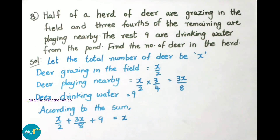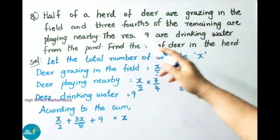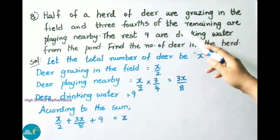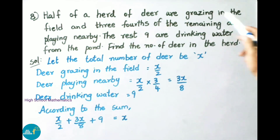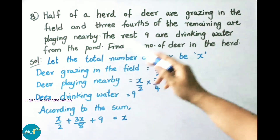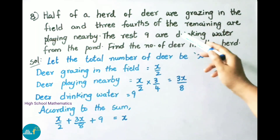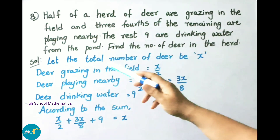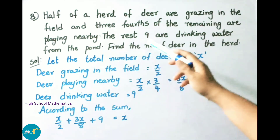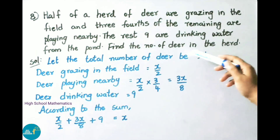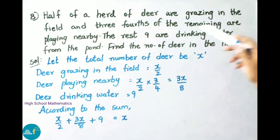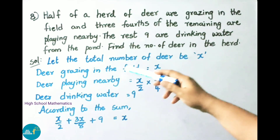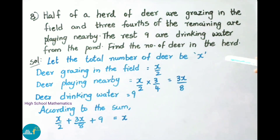Question number 8: Half of a herd of deer are grazing in the field and three-fourths of the remaining are playing nearby. The rest, 9, are drinking water from the pond. Find the number of deer in the herd.